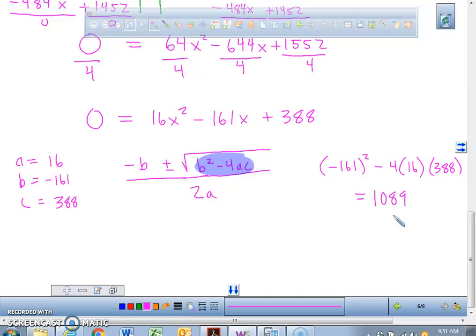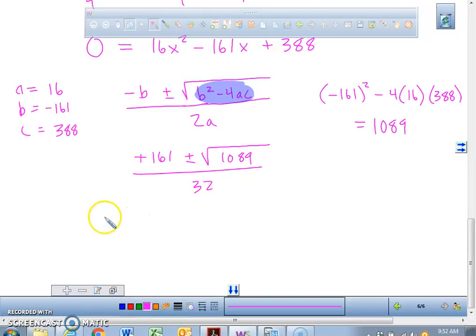So we're going to take negative 161 squared minus 4 times my A value, which is 16, times my C value, which is 388. You can put that in the calculator all at once. That number makes me very excited. It is a perfect square, 1089. The square root of 1089 is 33. That's why I was really excited.